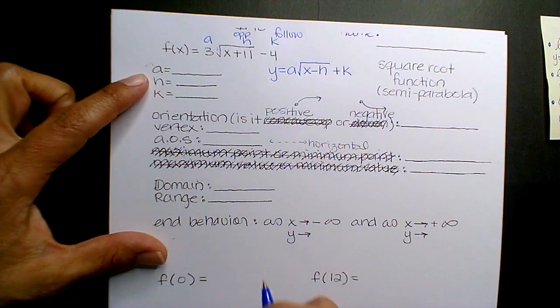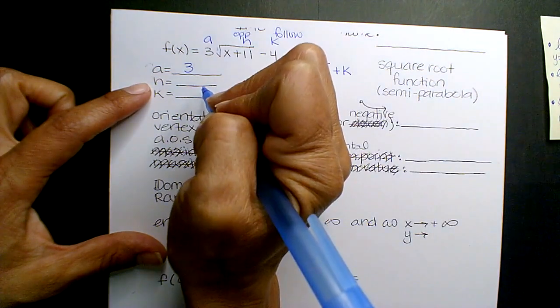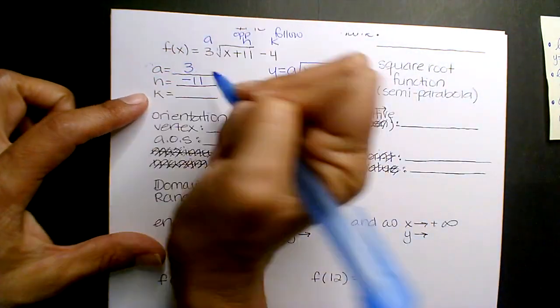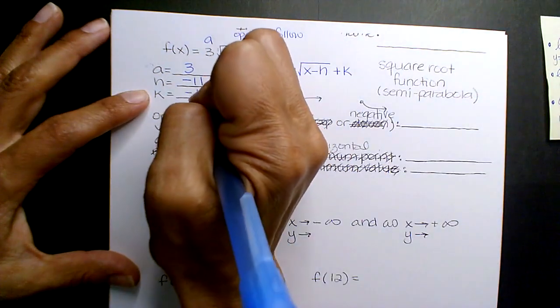What's the value of A? 3. H, positive or negative? Negative. Negative H? I mean, I'm sorry, K. Sorry, K. Negative 4. Negative 4, right?